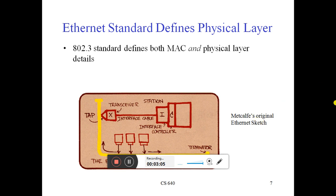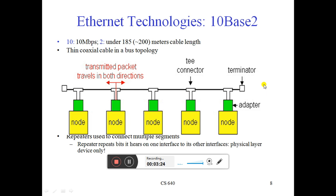The Ethernet that we are using has a transceiver station from which it can receive and post for communication. A terminator is used over there to communicate and terminate the layer. For the Ethernet topology, we have five nodes. From node one, the transmitting signal travels in both directions — that is the advantage of Ethernet. There is a T-connector and terminator, and an adapter to communicate the message to the node.